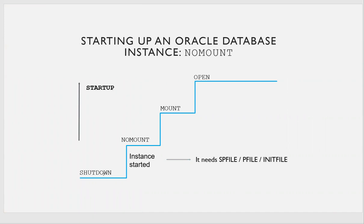When the database is shutdown and you go to no-mount, that is called instance started. To go from shutdown to no-mount, you need an SPfile. If you don't have an SPfile, it looks for a Pfile. If you don't have a Pfile, it looks for a dummy init file. If none of those exist, the database will not go to no-mount mode. If any of these files are found, the database goes to the no-mount state.